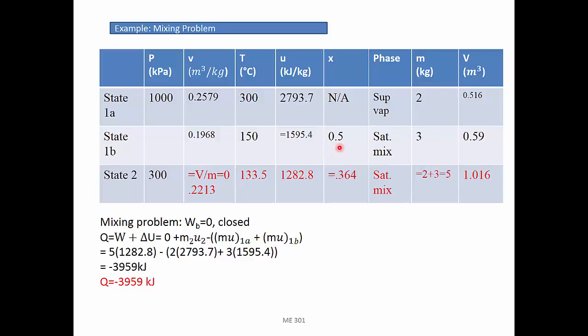From the property tables, we are able to determine the values for mass and the values for internal energies. After plugging everything in, we then find my total heat transfer rate. The value is equal to negative 3959 kJ.